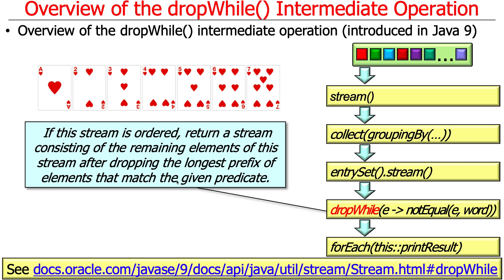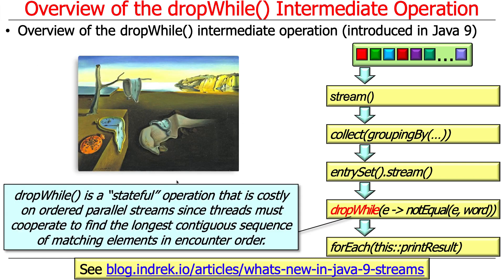If the stream is ordered, dropWhile returns a stream consisting of the remaining elements after dropping the longest prefix of elements that match the given predicate. This distinction is important: if you use dropWhile for an ordered parallel stream, it will be very expensive because all those different threads have to figure out what's the longest prefix — the longest contiguous section of matching elements in encounter order. That's not embarrassingly parallel behavior, so the streams framework gives you the correct semantics but it's very inefficient internally.